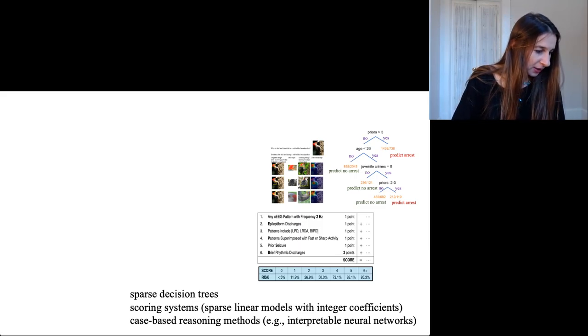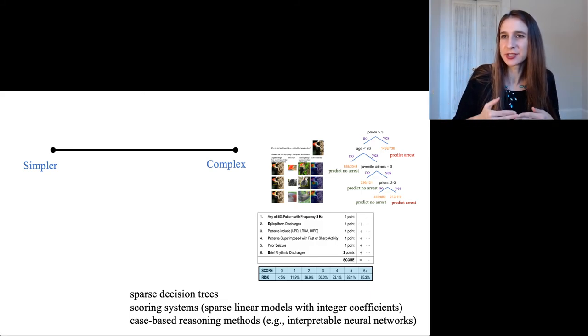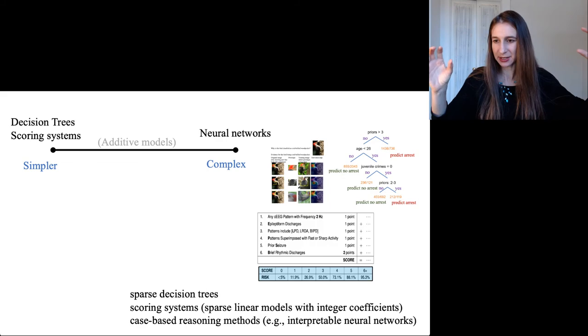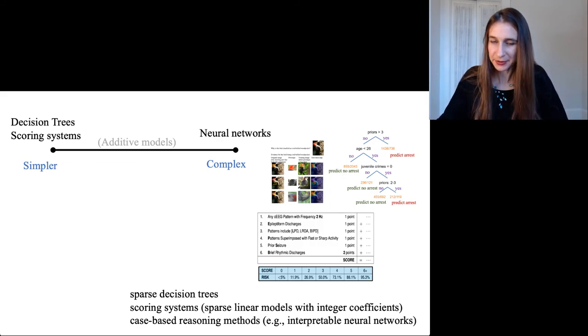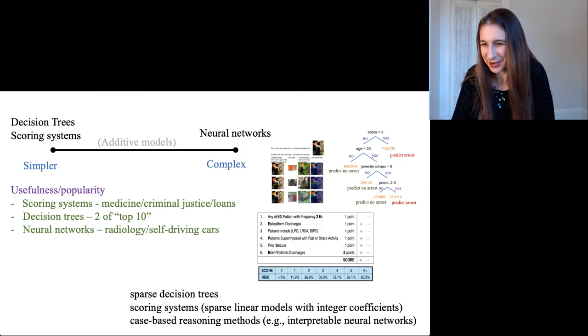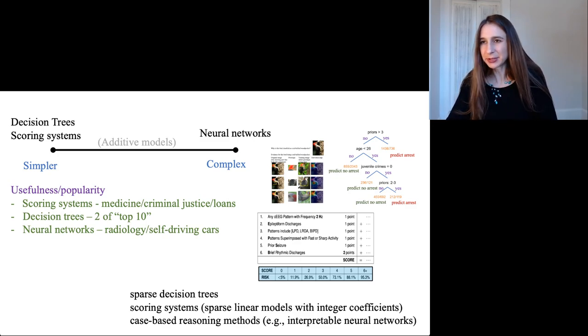The reason I've chosen these three topics is because they really span the space of simple models to complex models. An interpretable model, as I mentioned, does not need to be simple, it just needs to be constrained. I've chosen three topics that lie on opposite ends of the spectrum of simplicity but that are still interpretable. Another reason I chose these topics is because of how useful and popular they are. Scoring systems have been used for 100 years in criminal justice and are very popular in medicine. Decision trees were two out of the top 10 algorithms in data mining. They're very powerful and have been around for 50 years.